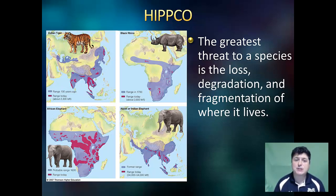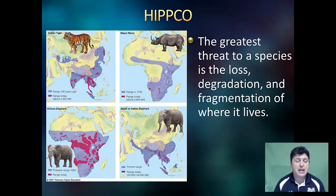Certain species are particularly vulnerable to local and regional extinction because of habitat fragmentation — those that are rare, those that need to roam unhindered over large areas, and those with low reproductive capacity. We can examine four major species — the Indian tiger, the black rhino, the African elephant, and the Asian or Indian elephant — and compare their range from many years ago to today, seeing that human activity and hunting have greatly reduced the range of these organisms.